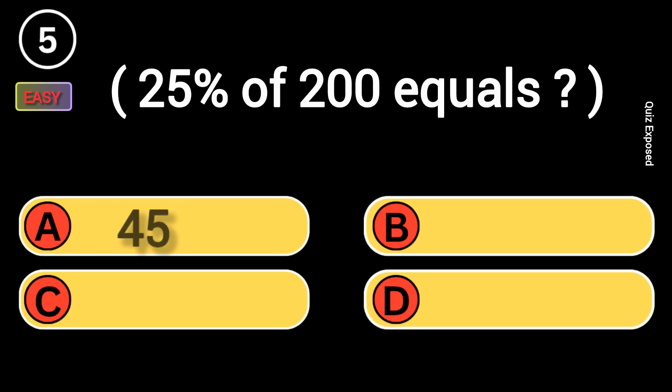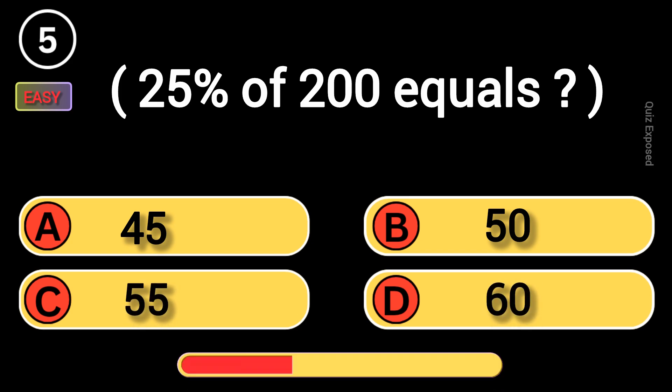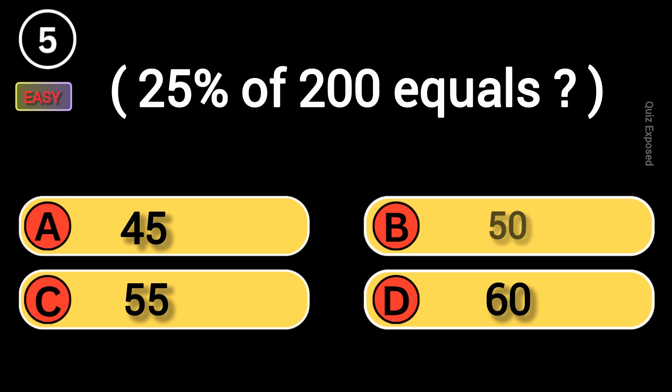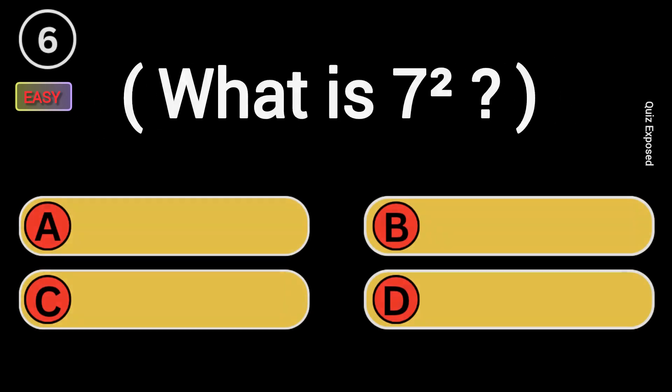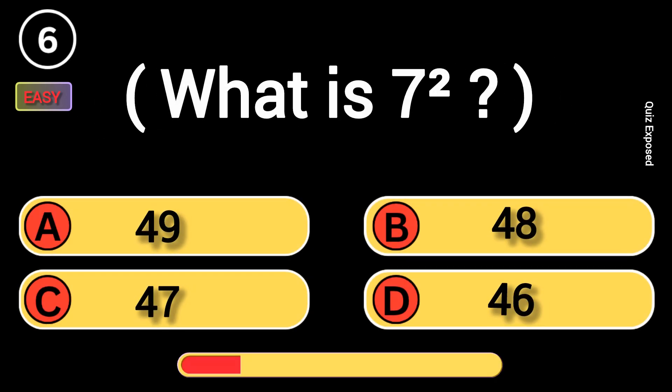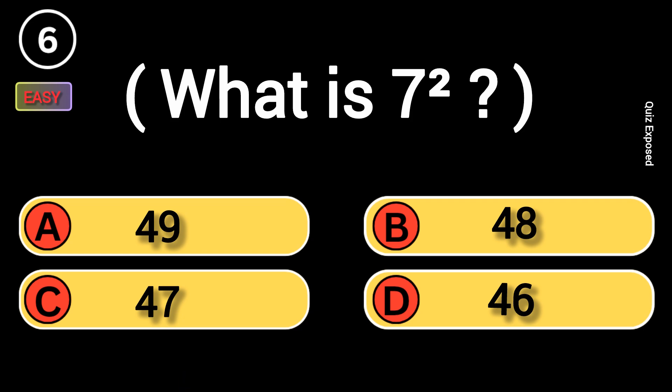25% of 200 equals? 50 is correct. What is 7 superscript 2? The next question is a must because it can help you win in exams, in life, and wherever you go. Correct, 49.